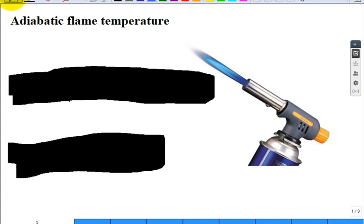And even if you burn it with pure oxygen, it burns at a lot higher temperature. So how do we calculate this adiabatic flame temperature? First of all, what's the word adiabatic mean?